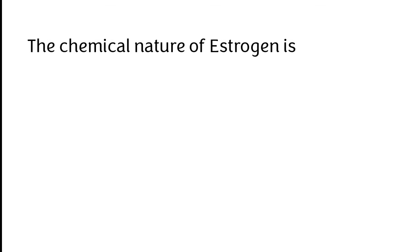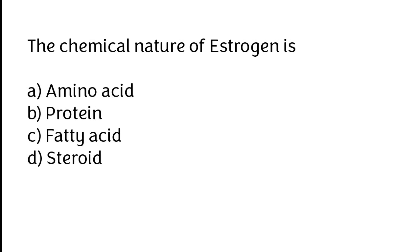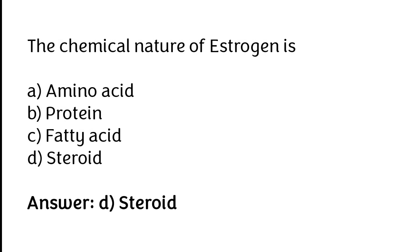The chemical nature of estrogen is: amino acid, protein, fatty acid, steroid. The correct answer is option D. The chemical nature of estrogen is steroid.